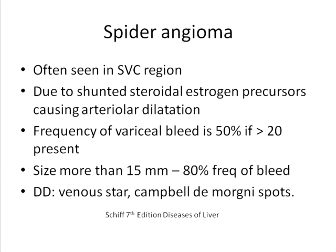The differential diagnosis includes venous stars, which are seen predominantly in the lower limb, pelvis, or thigh region in patients with heart failure.